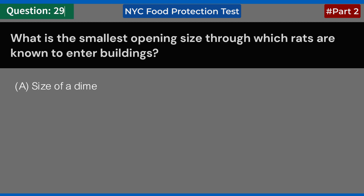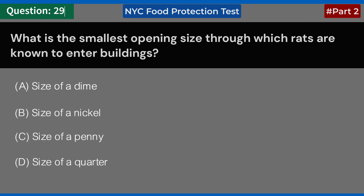What is the smallest opening size through which rats are known to enter buildings? A. Size of a dime. B. Size of a nickel. C. Size of a penny. D. Size of a quarter. Answer: D. Size of a quarter.